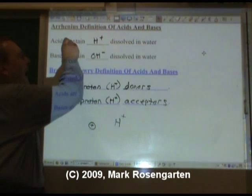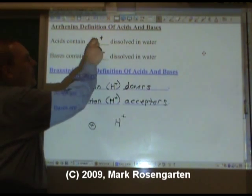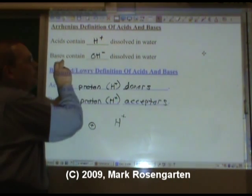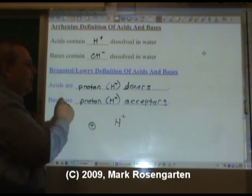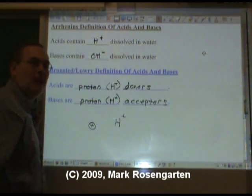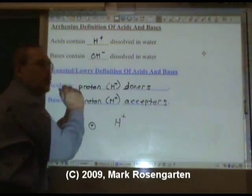See? Acids in Arrhenius are defined by what they have in their formula. Bases are defined by what they have in their formula. But Brønsted-Lowry definition defines Acids and Bases based on their actions. What do they do in a reaction?